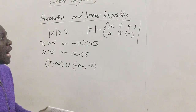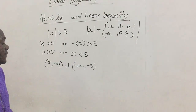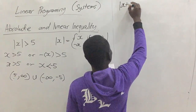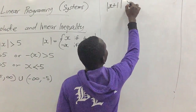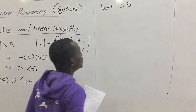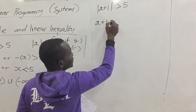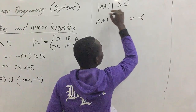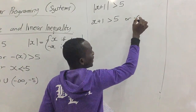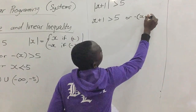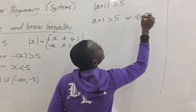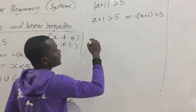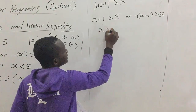We have the absolute value of x plus 1 greater than 5. We take both sides: if x plus 1 is positive, then x plus 1 is greater than 5. Or if x plus 1 is negative, then we negate the entire value to make it positive, so negative (x plus 1) is also greater than 5.